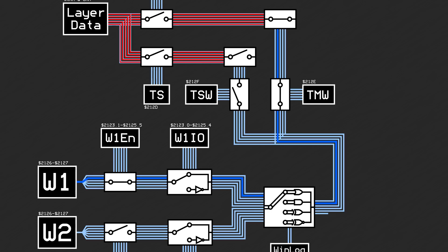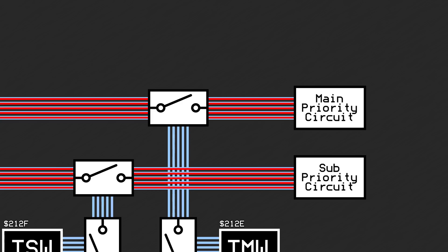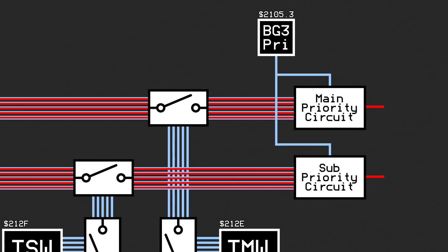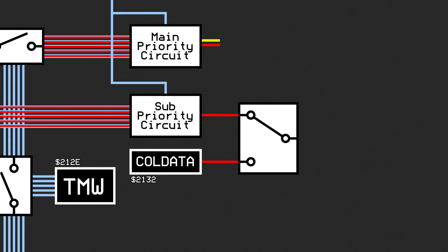The sixth output of the windowing pipeline comes into play later on. Next, the layer data that is enabled and outside the windows is put through the priority circuits. These circuits take in all of the layer data as input and output the one that has the highest priority — the one that is on top of all of the others. These circuits also take into account the BG3 high priority switch, which gives high priority tiles on background 3 the highest priority in background mode 1. After these circuits, the priority data is no longer needed, but the main screen still needs to know what layer the output came from. If all of the layer data is transparent for this pixel, the priority circuit will output CGRAM color 0 for the main screen and the fixed color for the sub screen.